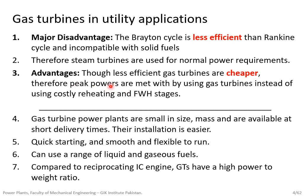In peak power situations, we might not be wasting money on Rankine cycle reheating and feed water heating stages. Additionally, gas turbines only use a range of liquid and gaseous fuels. They cannot use solid fuels because we need a clean-burning fuel. Solid fuels pose a threat to the turbine blade, whereas the Rankine cycle can use all different kinds of fuels. Compared to reciprocating IC engines, gas turbines also have a higher power-to-weight ratio.